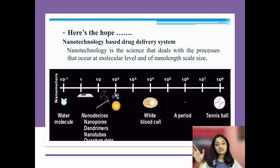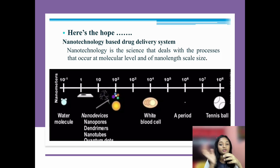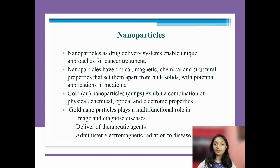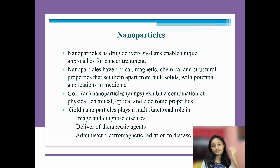Here you can see a nanolength scale size. At 10 to the power minus one we have a water molecule, at 10 to the power 4 we have a white blood cell, and at 10 we have nano devices, nanopores, and dendrimers. Nanotechnology is a science that deals with processes occurring at the molecular level and nanoscale size. Nanoparticles are ultrafine particles between 1 to 100 nanometers. As drug delivery systems, they enable a unique approach for cancer treatment, with magnetic, optical, structural, and chemical properties that set them apart from bulk solids.